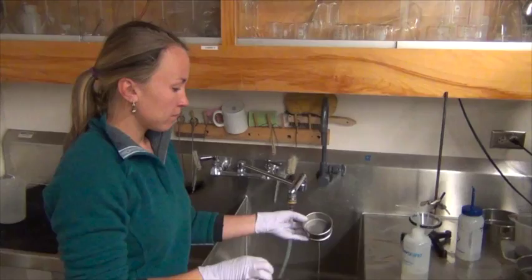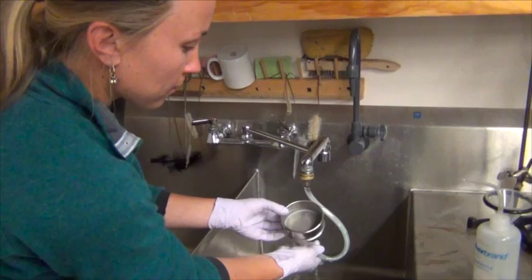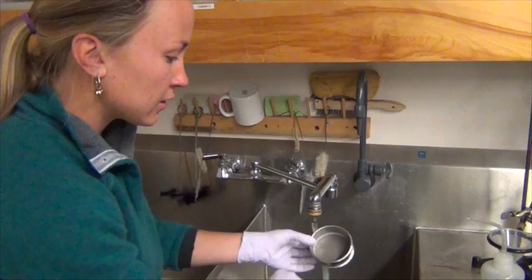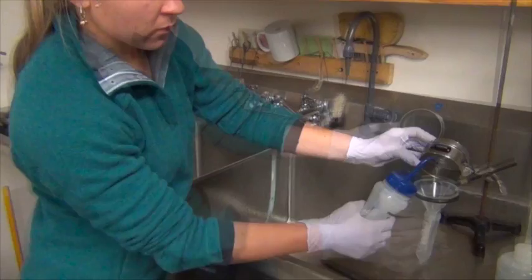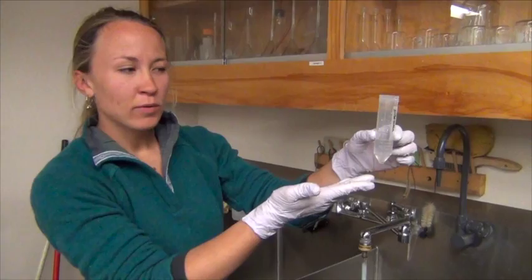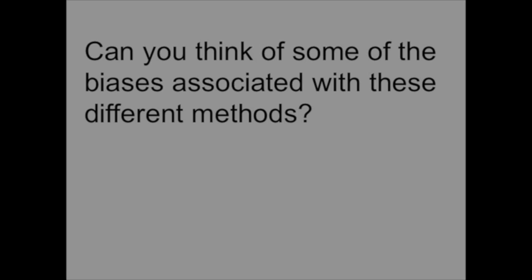Then we rinse the screen with clean tap water. That will rinse away any of the remaining sugar, collecting our nematodes in the screen. The last step is to collect the nematodes into a clean tube. So we rinse the screen. In the remaining water, you have your nematodes and a pretty clean sample.